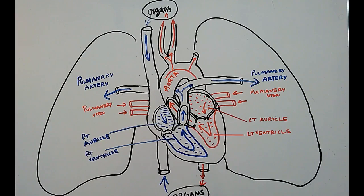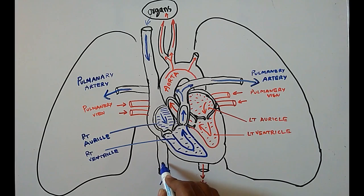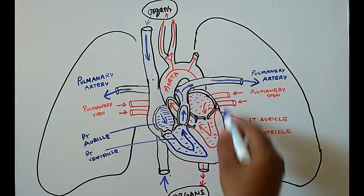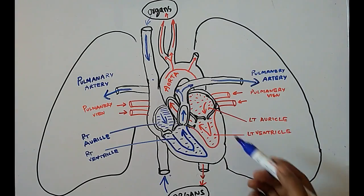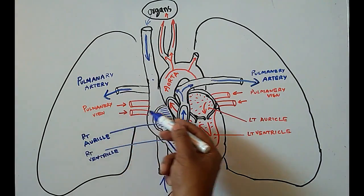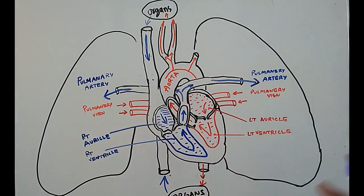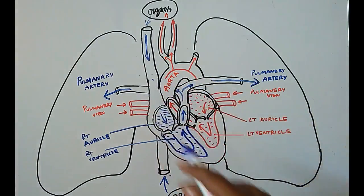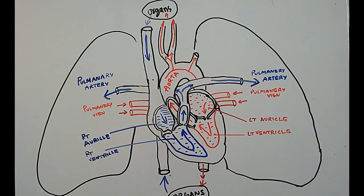From the aorta, some part of the pure blood goes to the body parts above and some goes to the body parts below the midline, through the aorta or coronary arteries. The organs consume oxygen and release carbon dioxide, making the blood impure again. This impure blood returns through the inferior vena cava and superior vena cava, and the cycle continues. Impure blood goes once through the heart to the lungs; pure blood goes once through the heart to the body — this is called double circulation.